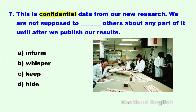Confidential is the same thing as secret. We say not supposed to when we mean should not. Due to the logic of the sentence, it makes no sense not to hide the secret information — in fact, we should hide it. Furthermore, we would need from after hide, even if it were correct. For C, keep — similar to hide — you would also need from. Whisper means to speak quietly to someone else; although it could be used for secrets, the best word is inform, which means tell. Number seven: This is confidential data from our new research. We are not supposed to inform others about any part of it until after we publish our results.